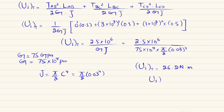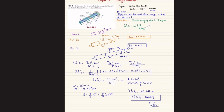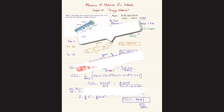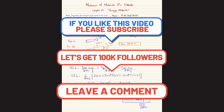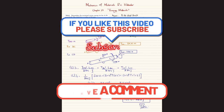Substituting: U = 2.5×10⁶ / (75×10⁹ × (π/2)×(0.03)⁴). Solving this gives a torsional strain energy of 26.2 newton·meters, which equals 26.2 joules. This is the torsional strain energy stored in the shaft due to the given loading.